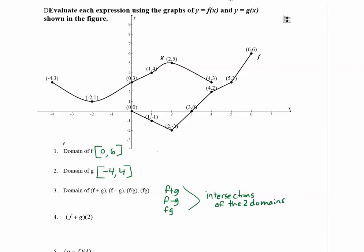For instance, f was 0 to 6. So if we do a number line and we just show 0 to 6, and just connect and shade between, and then let's do a number line for the domain of g, negative 4 to positive 4.